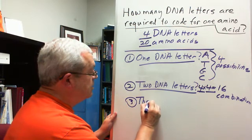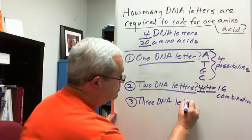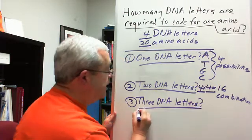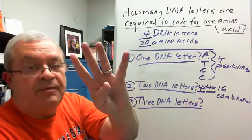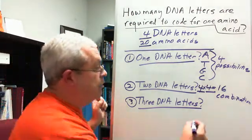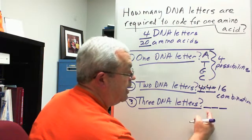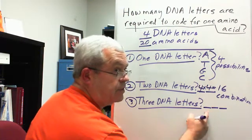Three DNA letters. Could that be the answer? In other words, we have four letters, and now we're thinking of taking three at a time. Well, now we have three positions. We have A, each one of them could be A, T, G, or C.